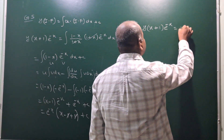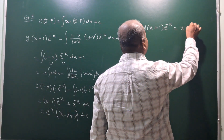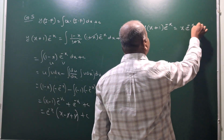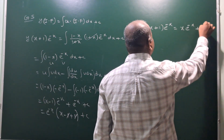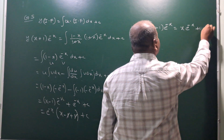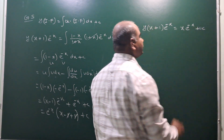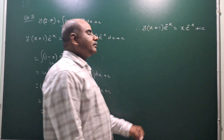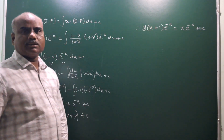So finally, this is the required general solution: y(x + 1)e^(−x) = xe^(−x) + c. Thank you.